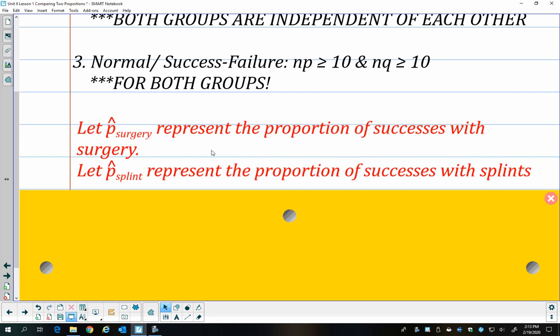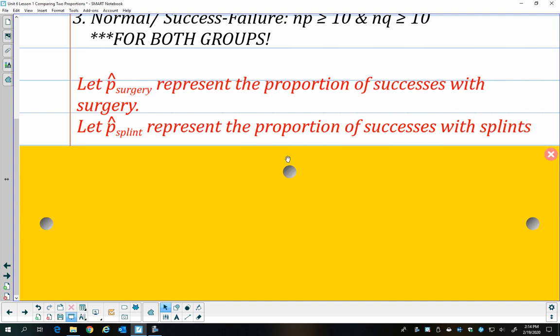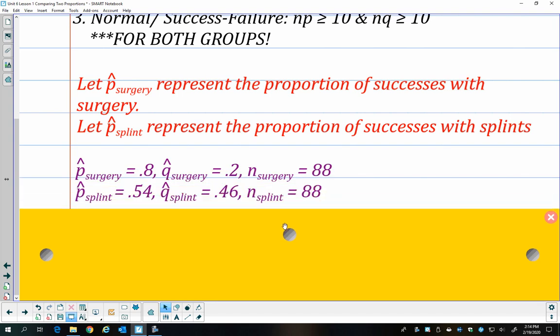I want to do something sort of unique to this. We haven't had to do this before. We have two different p-hats, so we need to be specific. So I want to identify that I have one p-hat for surgery and one for splints. And so I actually want to call that out so that for the rest of the problem, I could just use p-hat surgery and p-hat splint and know what it means. And so 80% of our surgery patients had success, 54% of the splint patients had success.